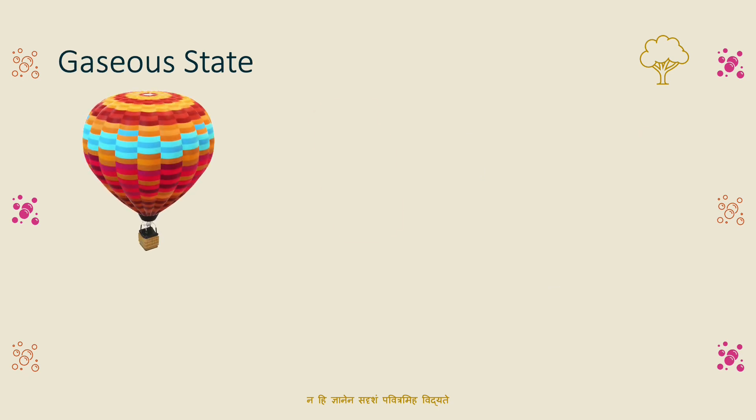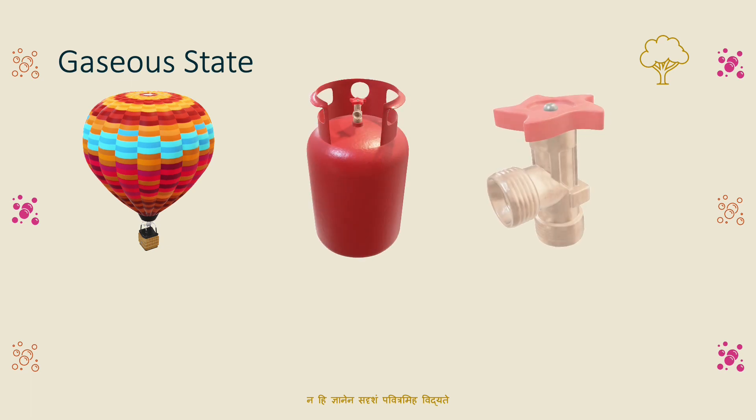The third state is the gaseous state. One example is helium. A second example is a cylinder of compressed gas. A third example is a T-shaped pipe where gas is slowly released.